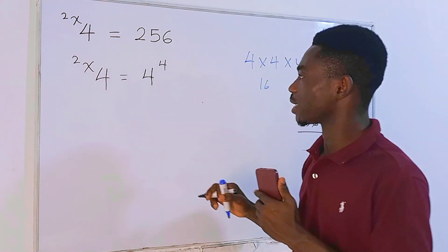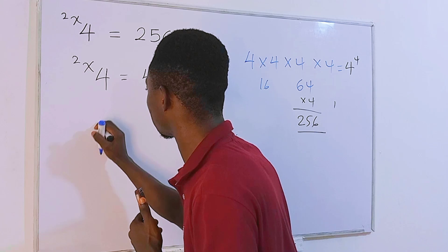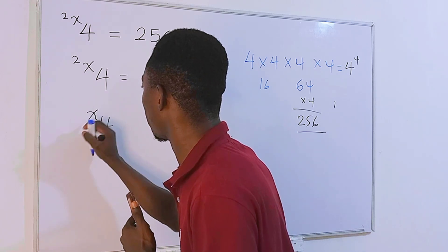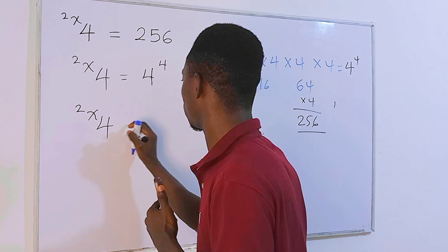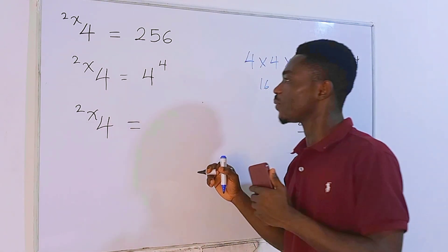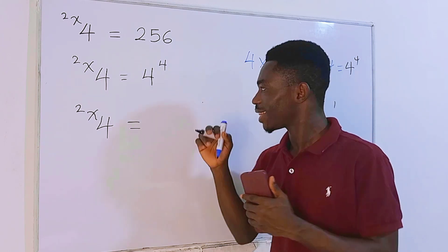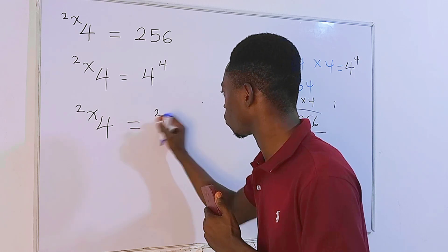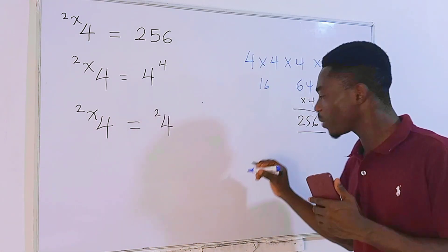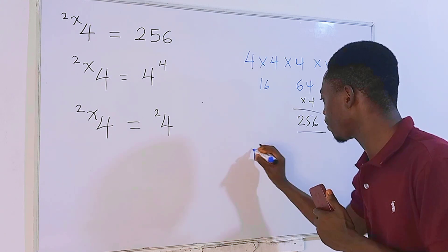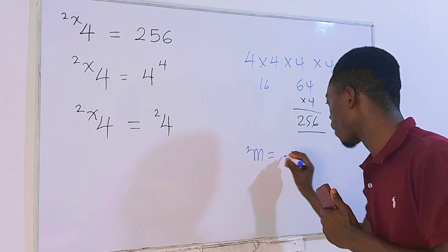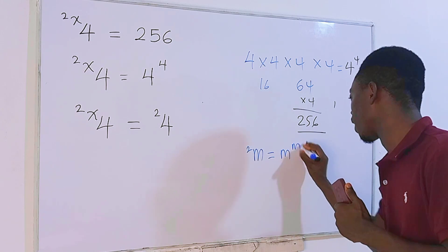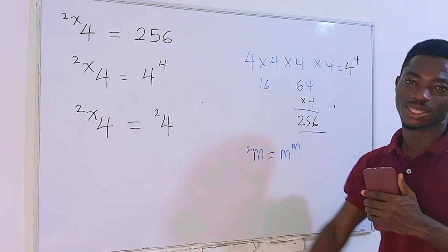This is what we have to do instead. I'll keep the left hand side, which is 4 tetrated to x tetrated to 2. Then the right hand side, we can rewrite this in the form of tetration. This is obviously the same as 4 tetrated to 2 because whenever we have m tetrated to 2, we can rewrite this as m to the power m.